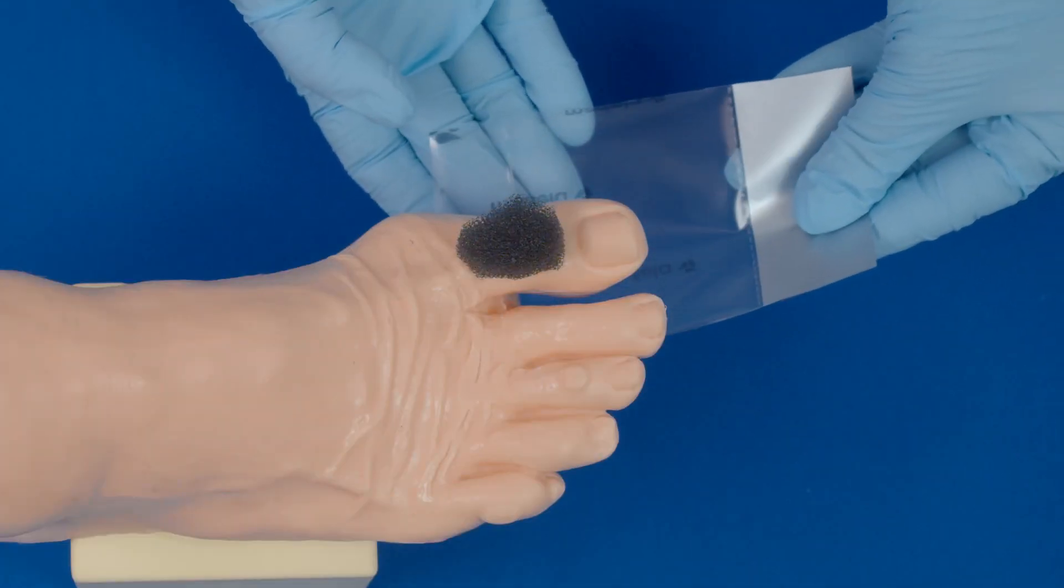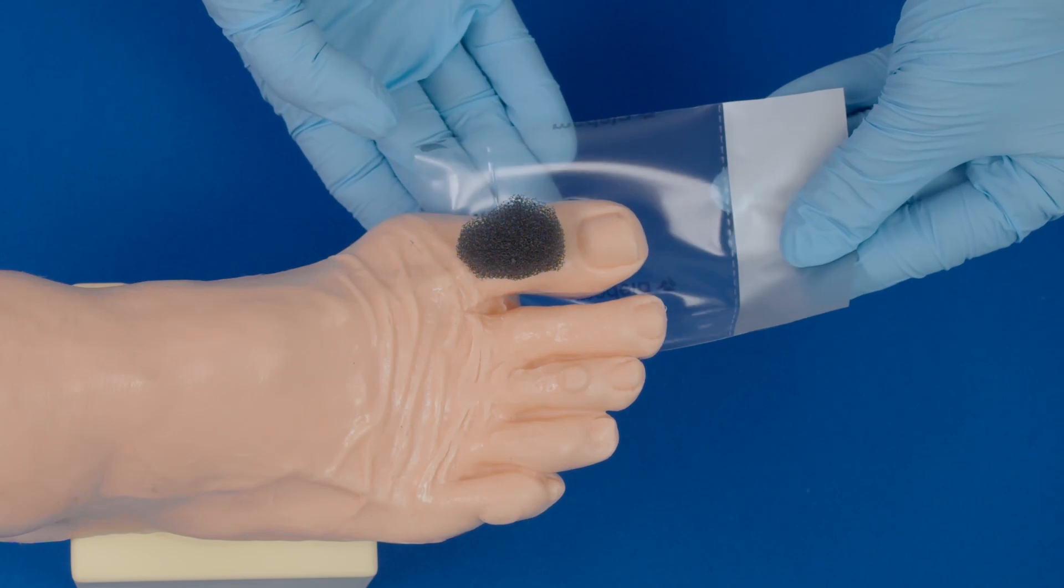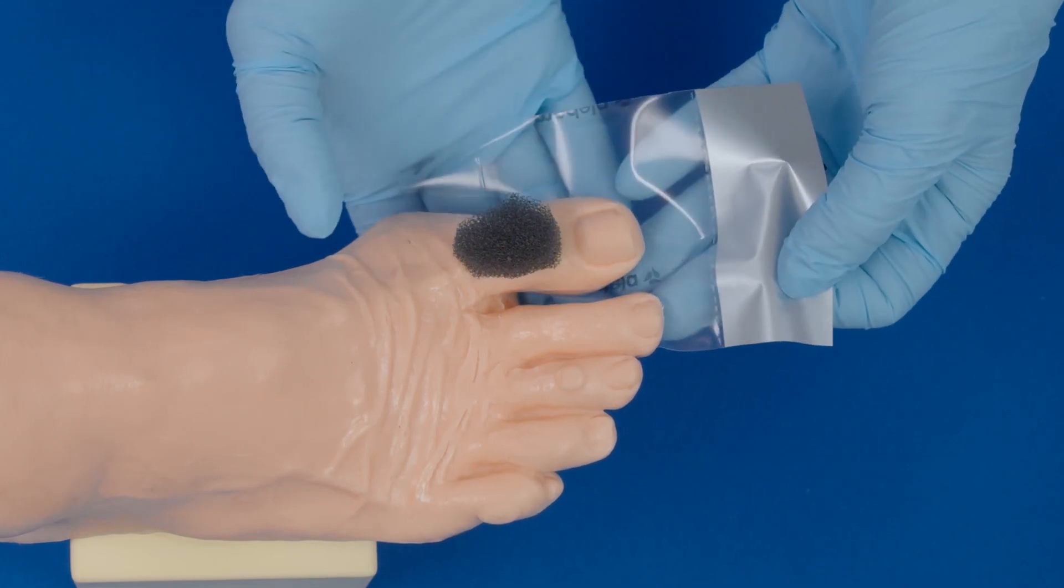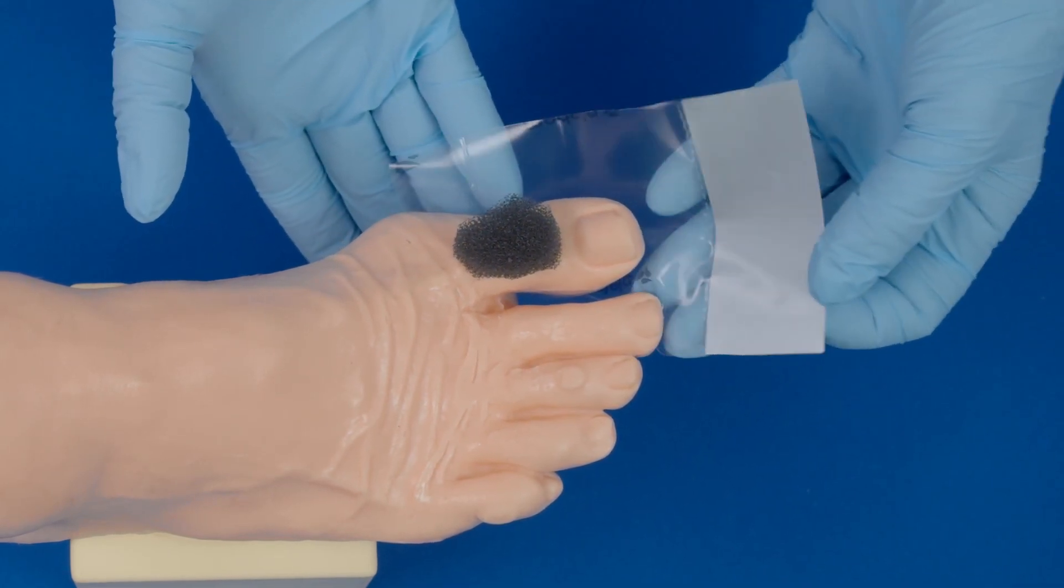Place a piece of transparent film on the bottom of the foot that will cover the wound and toe or toes next to it.